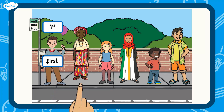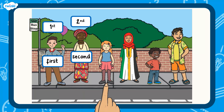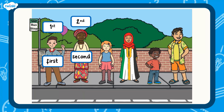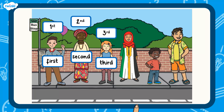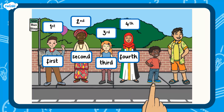The next person is in position number 2. They are second. The girl is in position number 3. She is third. The lady behind her is in position number 4, so she is fourth. The little boy is in position 5, so he is fifth.